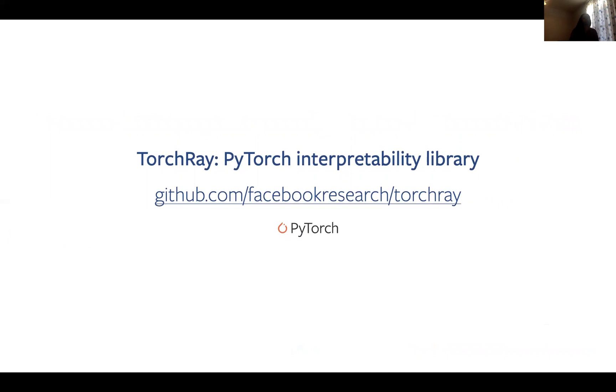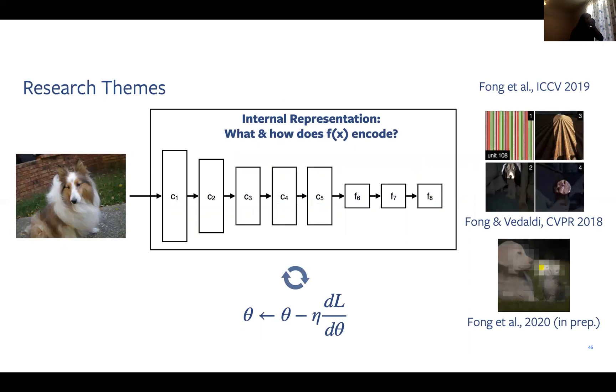Finally, in collaboration with Facebook research, we released the TorchRay library, which is focused on empowering other researchers and practitioners to easily use and compare interpretability tools by us and others. In this initial release, we focused on attribution methods. And what we were really motivated by was being able to support reproducible research.